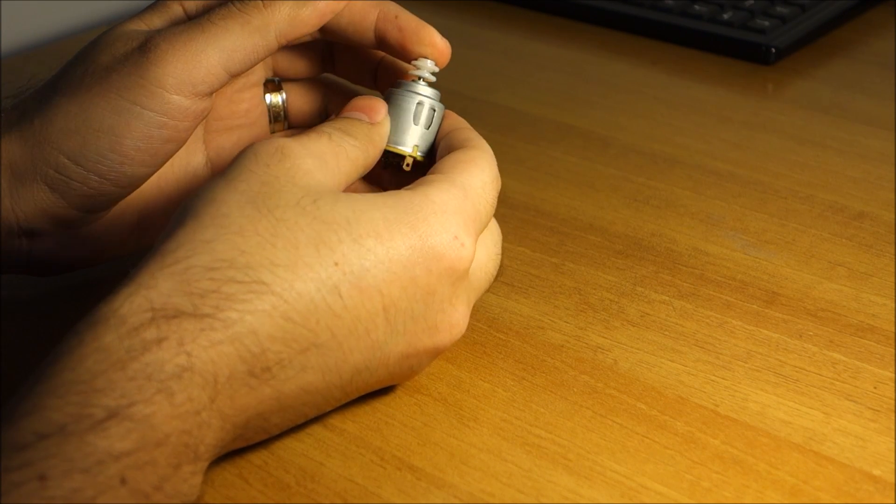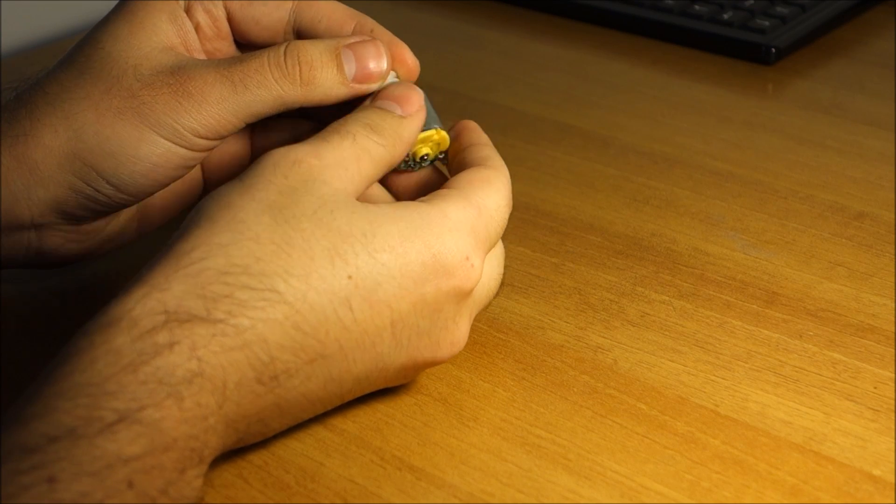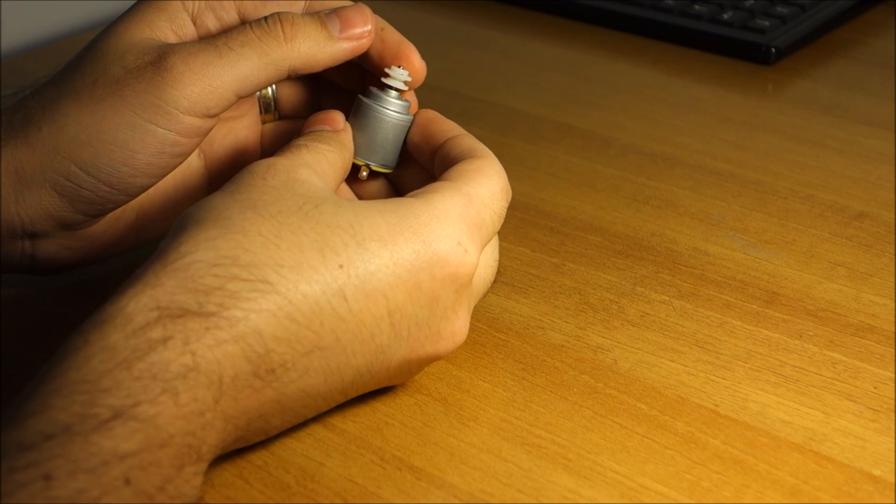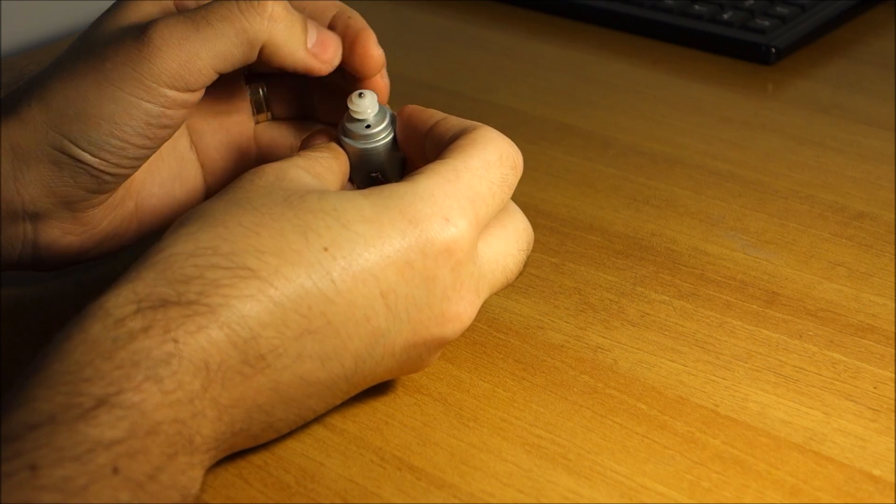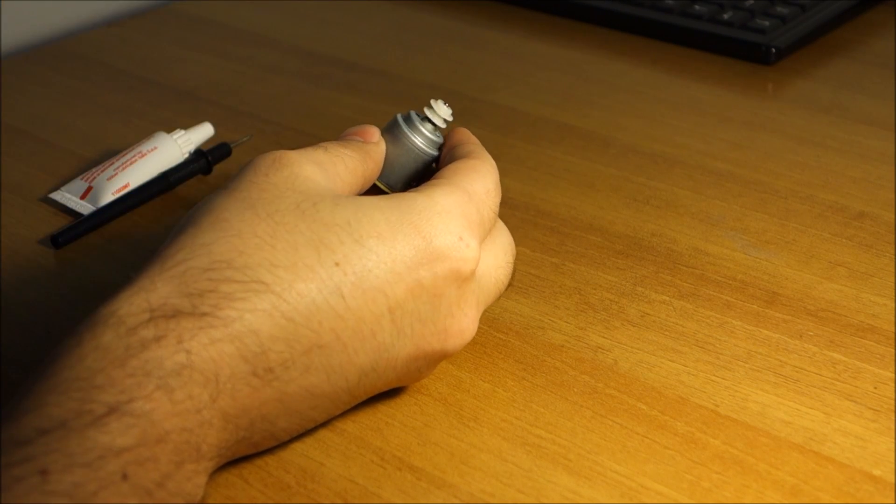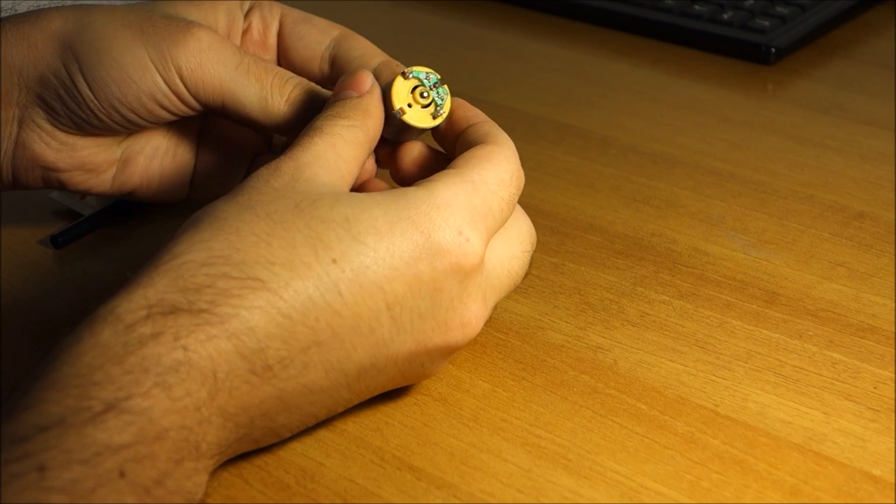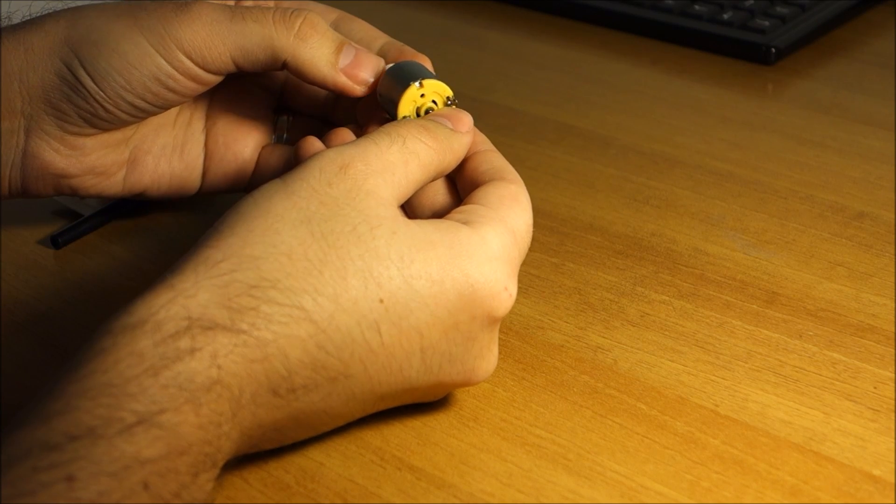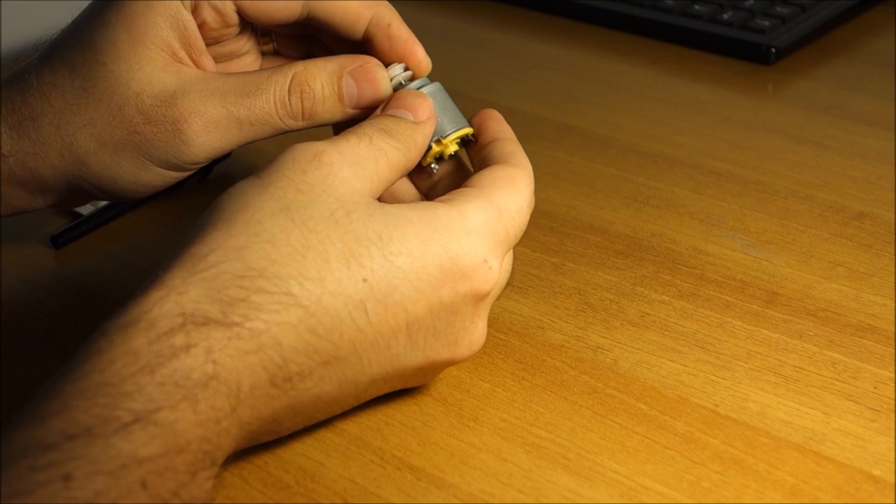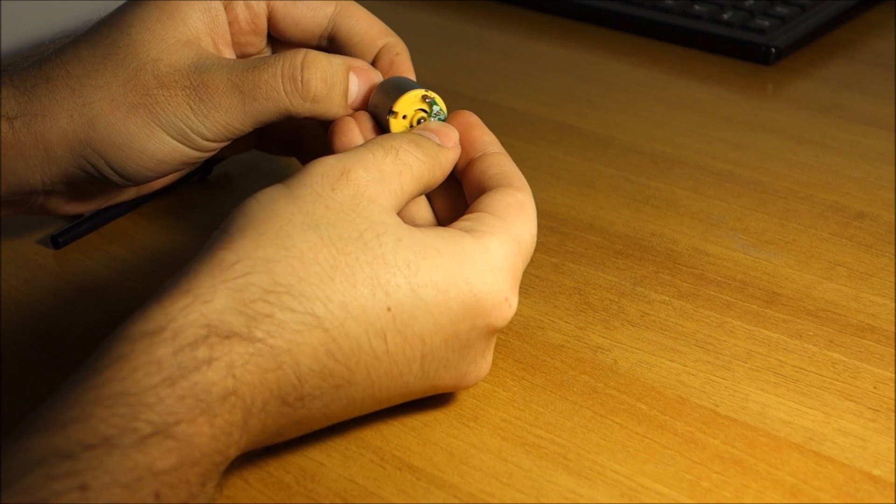Basically, even if they are not used, the grease in the bushings in the ends—they don't have bearings, they are small bushings—starts to dry.